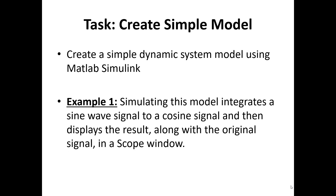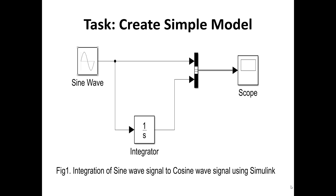For simulating the model that integrates a sine wave signal to a cosine signal and displaying the result along with the original signal in the scope window, I have provided a separate video discussion on that. This will be the target output. In this example, the figure illustrates the integration of the sine wave signal to cosine wave signal using MATLAB Simulink, showing the blocks: the sine wave, the integrator, the bus, and the scope block.